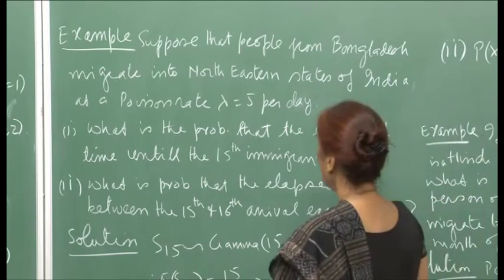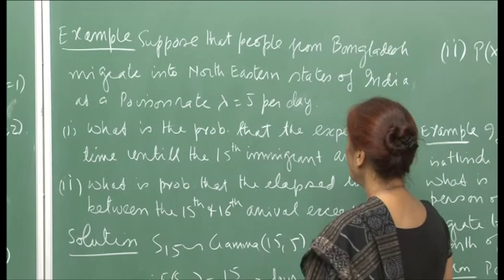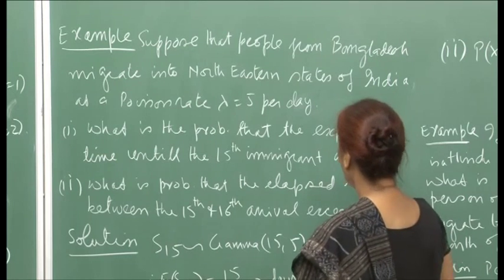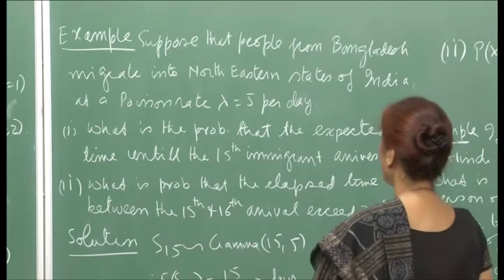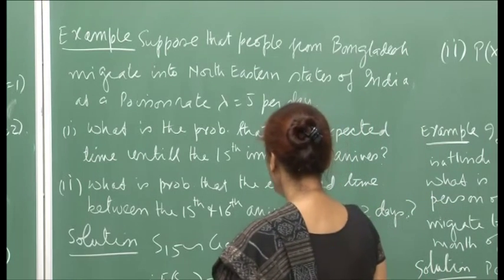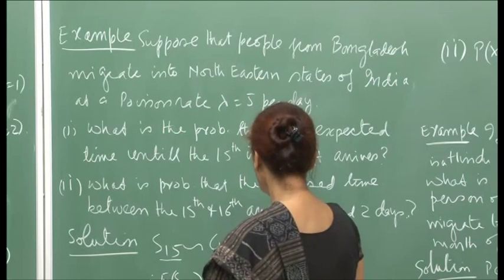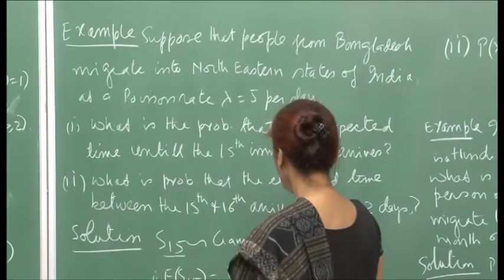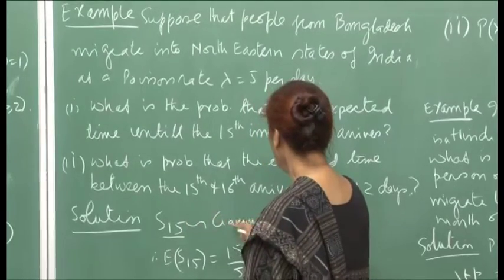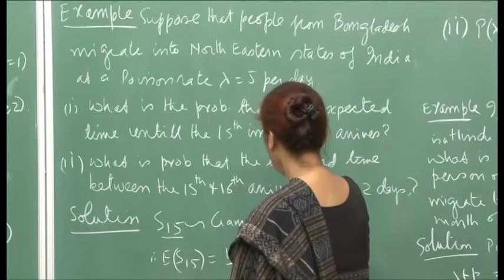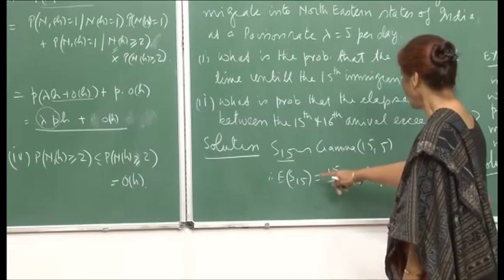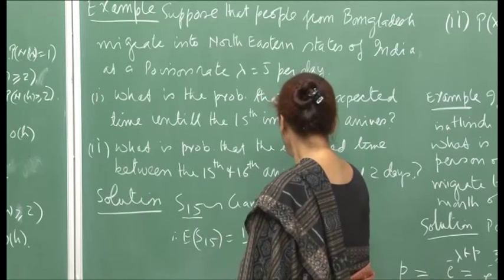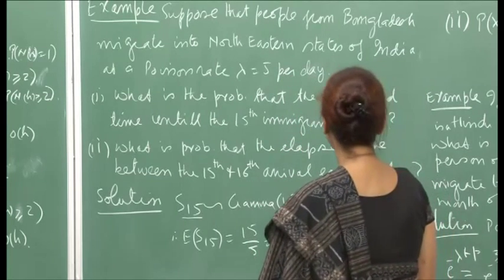Example: People from Bangladesh migrate to northeastern states of India at a Poisson rate of λ = 5 per day. The expected time until the 15th immigrant arrives is E[S15]. Since S15 ~ gamma(15, 5), the expected value is 15/5 = 3 days.